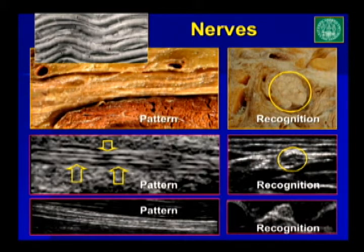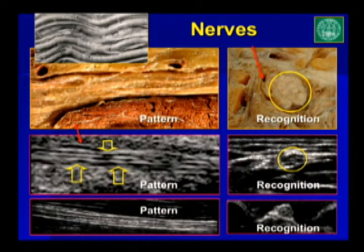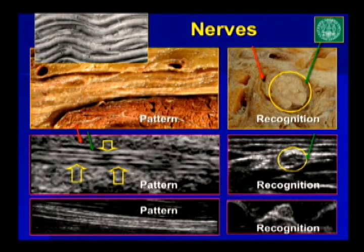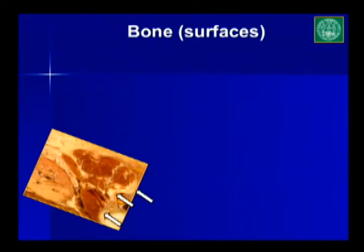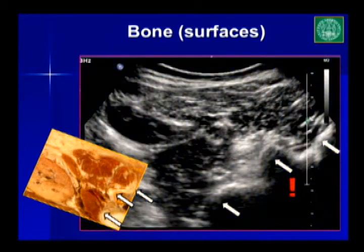This is very important for regional anesthesia. If you don't come close enough to the nerve, the local anesthetic will go anywhere and not reach your target. The right spot would be near to, but not into, and not far away from the nerve — in this case, the ulnar nerve. This is something we have to learn using ultrasound-guided regional anesthesia.